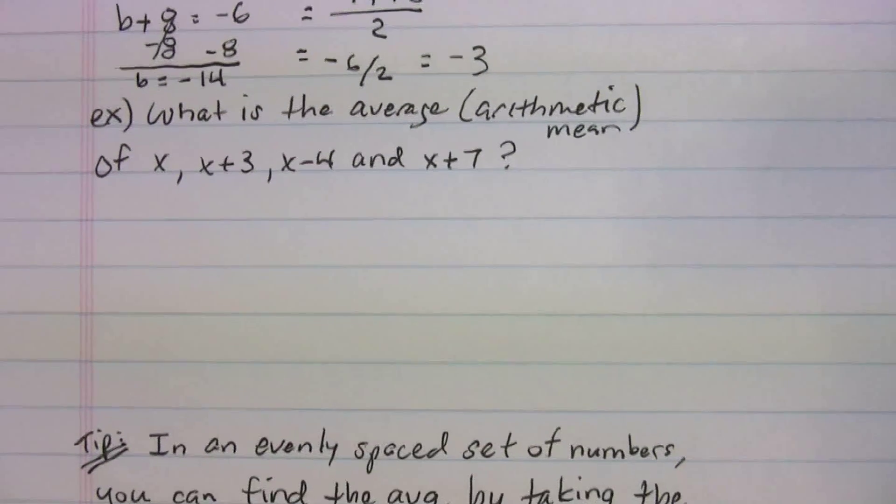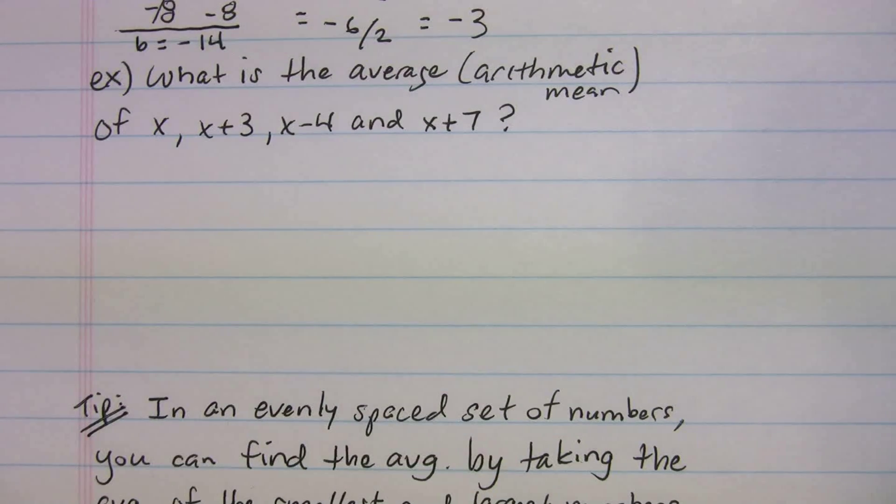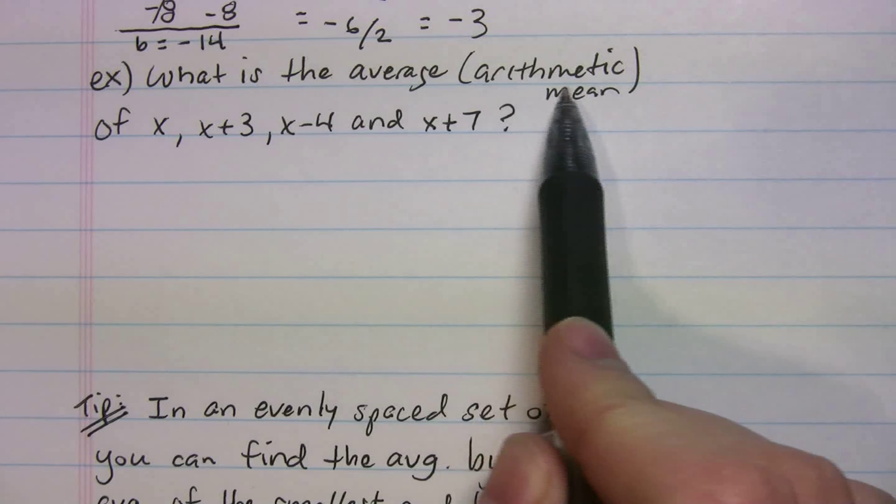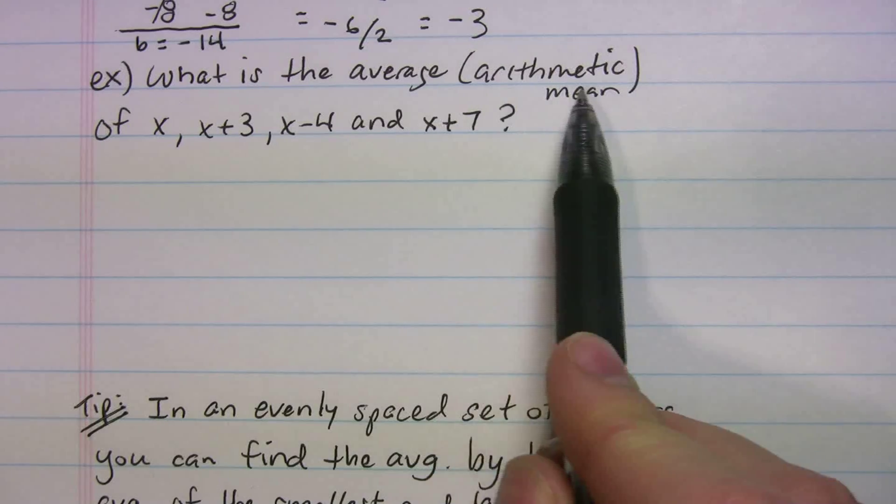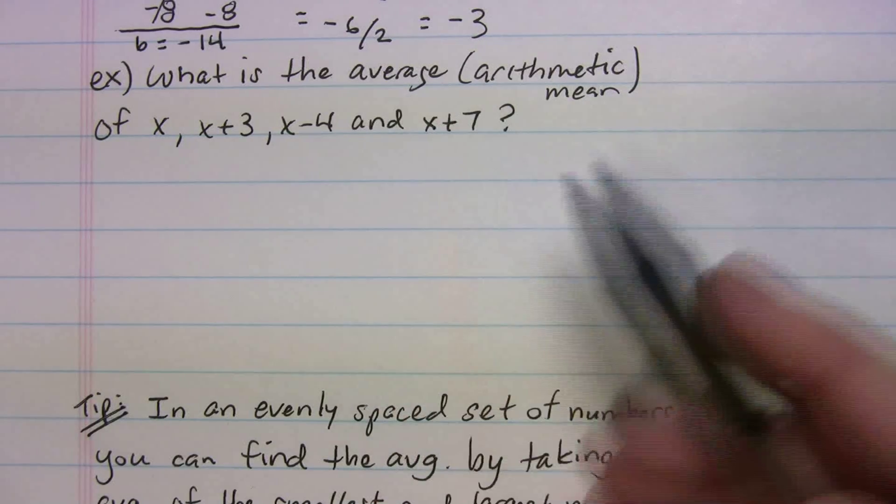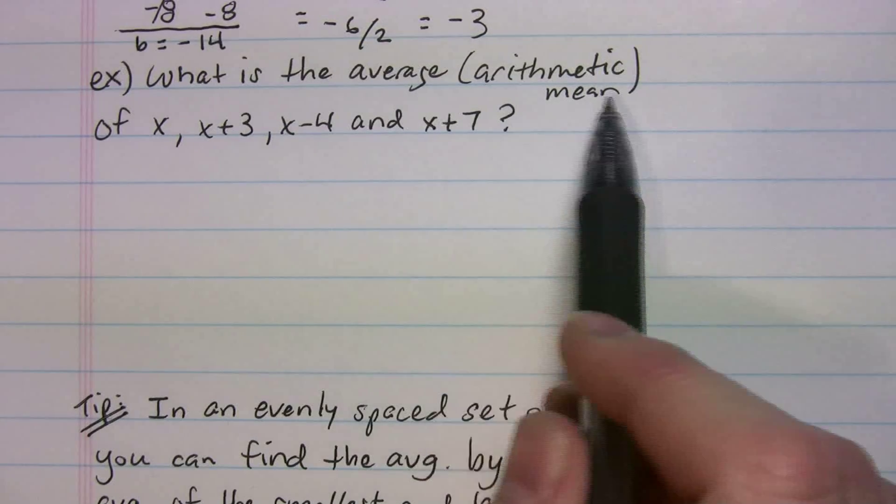Let's try a slightly harder one. This one says, what is the average or arithmetic mean of x, x plus 3, x minus 4, and x plus 7? Again, you can pause the video here and try it on your own. I'm just going to go into the explanation. Also, real quick, when it says arithmetic mean, don't worry about that. That's just the SAT's way of saying the average. So you can pretty much ignore that when you see it.